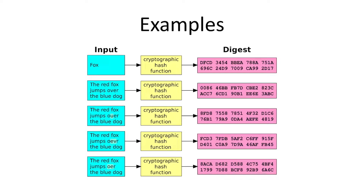The digest size here is 160 bits or 20 bytes. So each of these values is 160 bits or 20 bytes. As you can see, the digest is different for each message. These four messages differ in only one or two letters, but their message digests look unique and completely random.